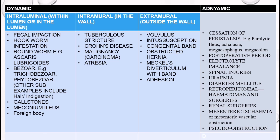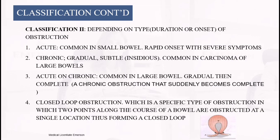Classification two is by duration or onset: acute obstruction is common in the small bowel with rapid onset of severe symptoms; chronic obstruction is gradual in onset, common in carcinoma or adhesions; acute-on-chronic is common in the large bowel, starting gradually then becoming complete. Closed loop obstruction is a specific type where two points along the bowel are obstructed at a single location, forming a closed loop.